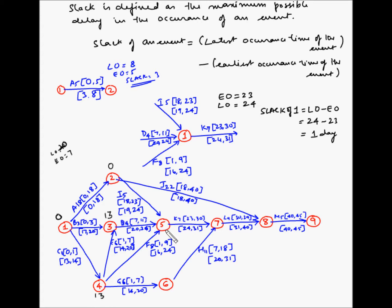For event 5, there are 3 activities: I, D, and F. The latest occurrence is 24 for all three, and the earliest finish times are 23, 11, and 9 respectively. The latest of the earliest finish times is 23, so slack is 24 minus 23, which is 1. For event 6, the latest occurrence of activity G is 20 and the earliest occurrence is 7, so the slack is 20 minus 7, which is 13.